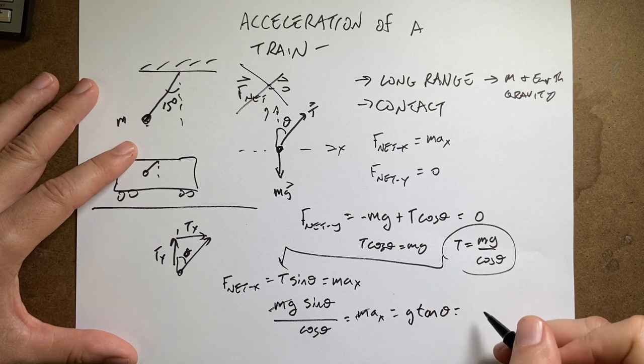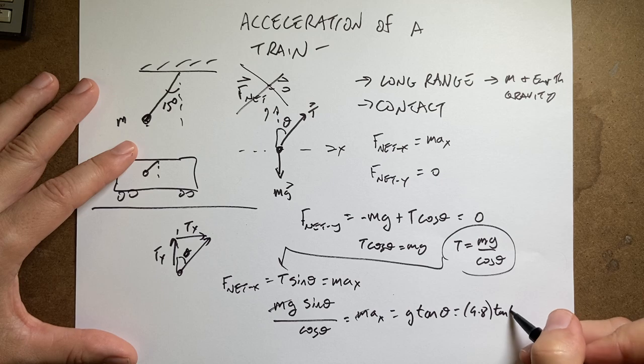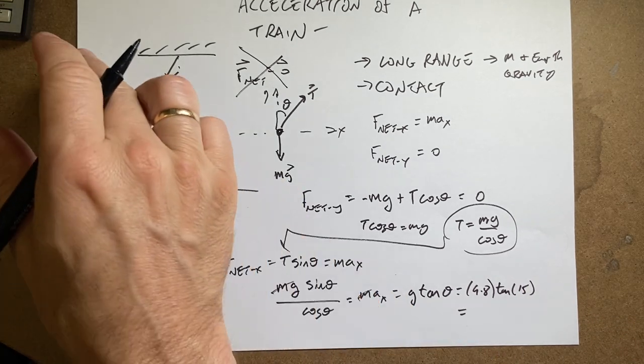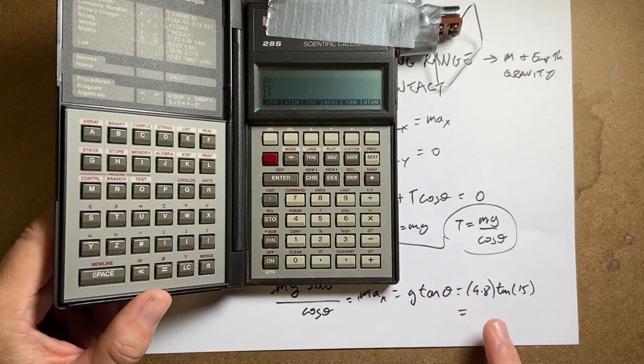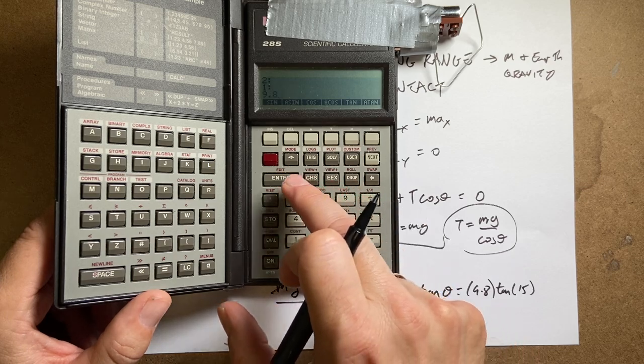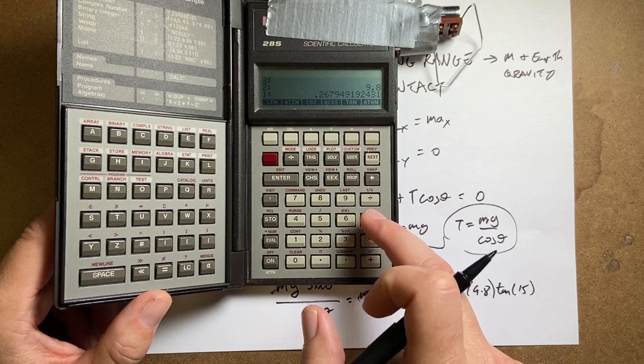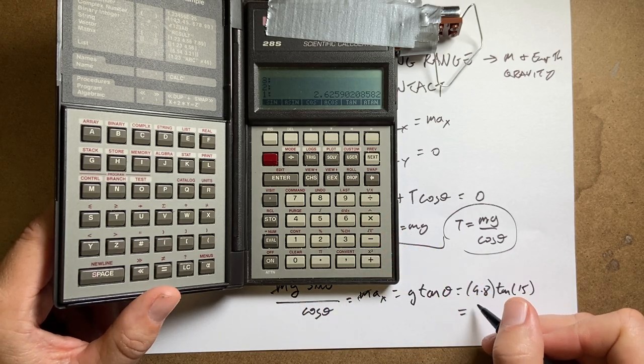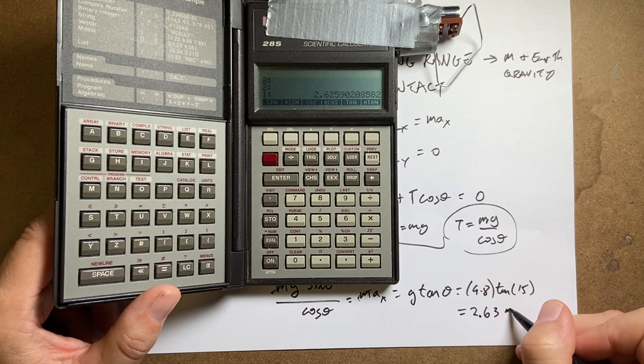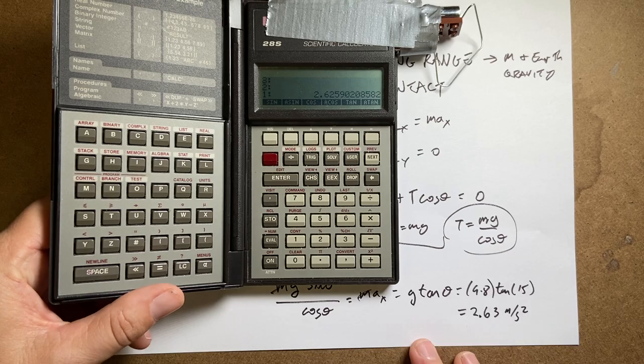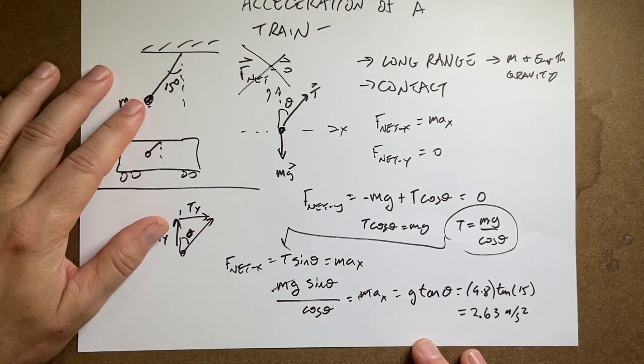So now I'm going to put 9.8 times tangent of 15 degrees. And I'm going to put that in my calculator. So I'm going to drop that last problem. 9.8 enter. 15 tangent times. And I get 2.63 meters per second squared, which actually is pretty fast, pretty good high acceleration. But there you go. That's the acceleration of a train when you have this thing swinging back like that.